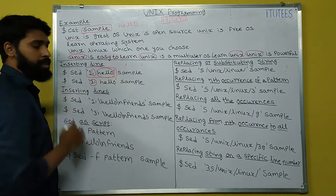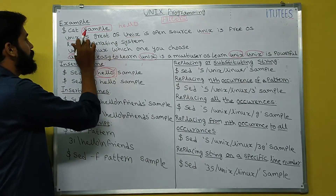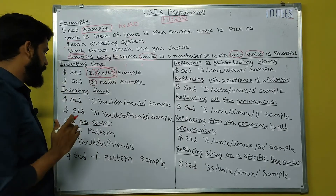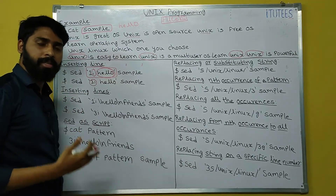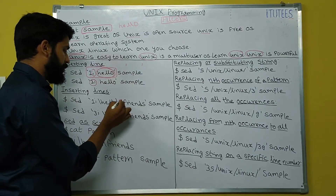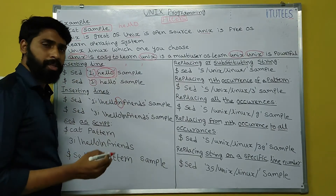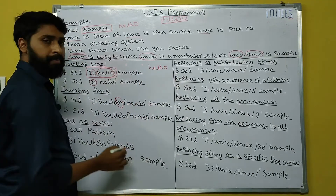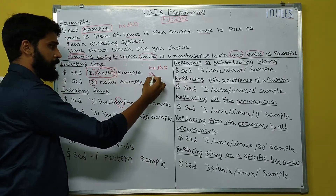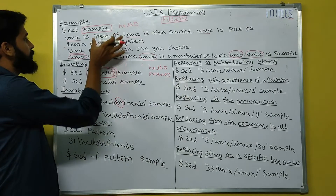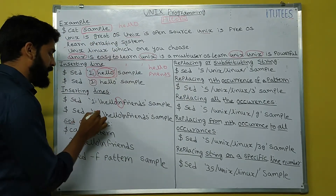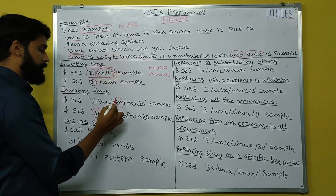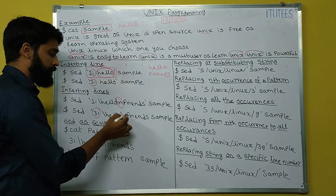Similarly, '3i' means insert hello as the third line. To insert more than one line, we use a backslash, which means new line. So '1i hello\friends' inserts 'hello' as the first line and 'friends' as the second line. Likewise, '3i hello\friends' inserts both lines starting at the third position — hello becomes the third line and friends becomes the fourth line, because we use the backslash for a new line.